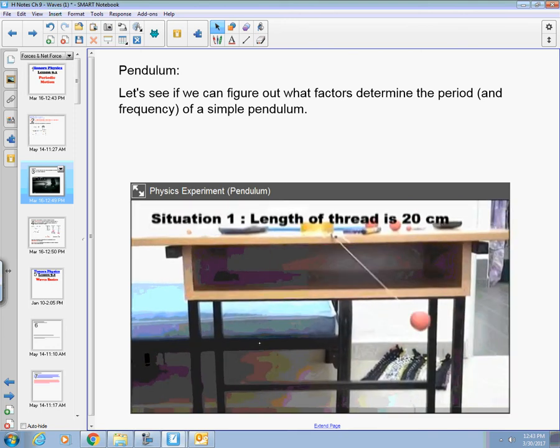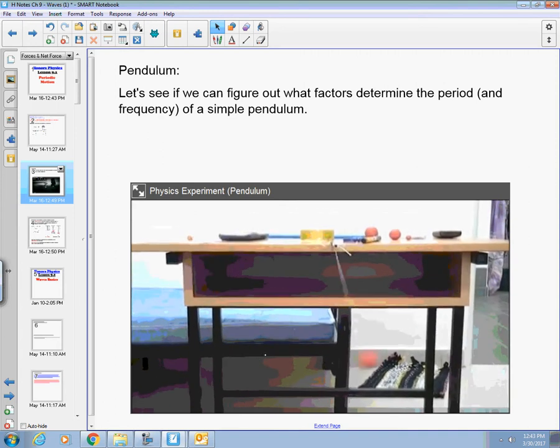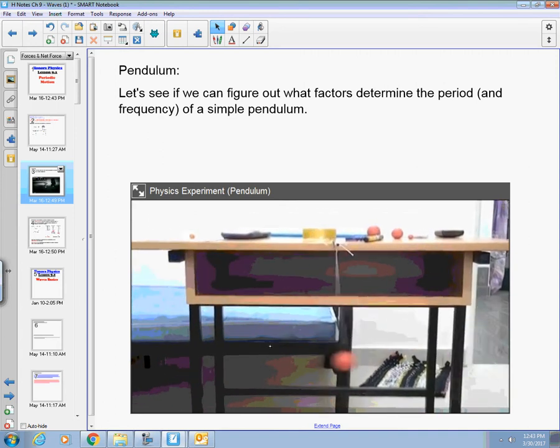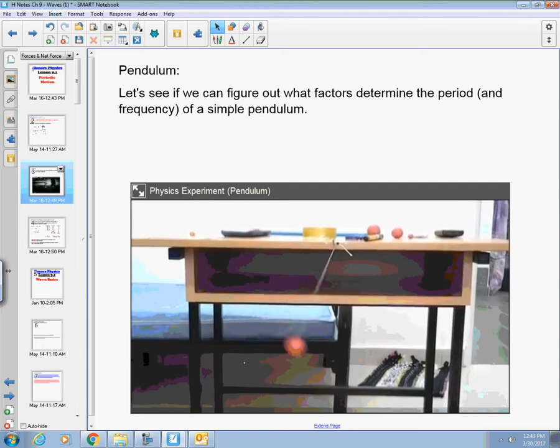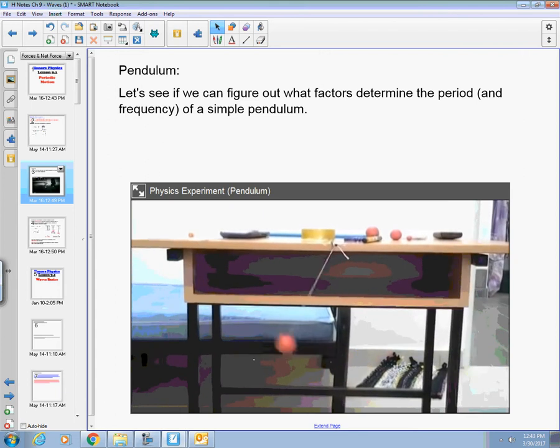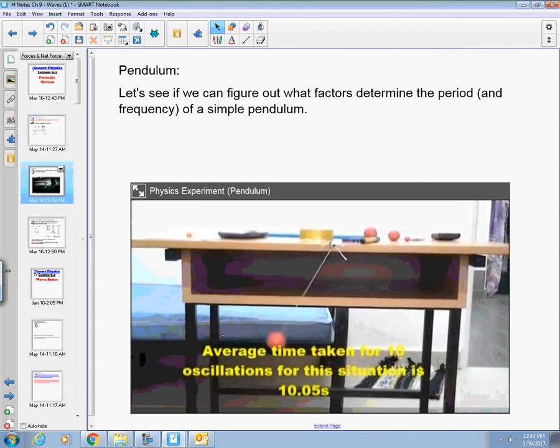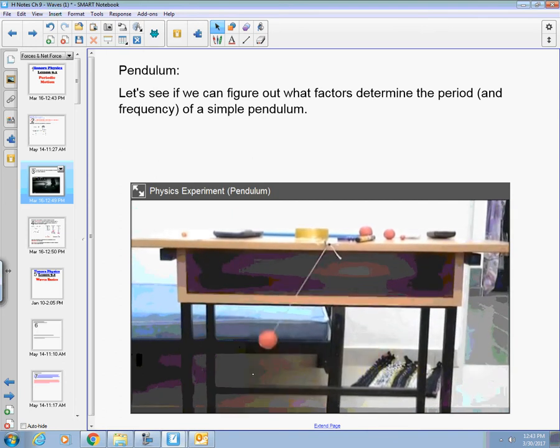So situation one, we have a length of thread, 20 centimeters, and we have a fixed mass. The key here is we're only changing one variable. Don't look too hard. You might get dizzy. You can always calculate your own time, but he came up with 10 seconds for its period.